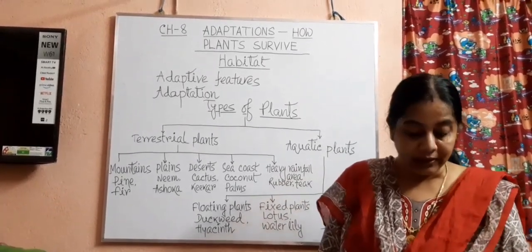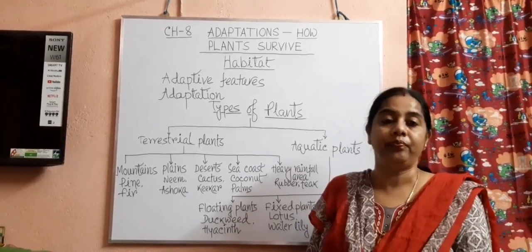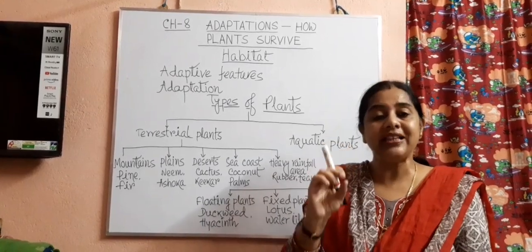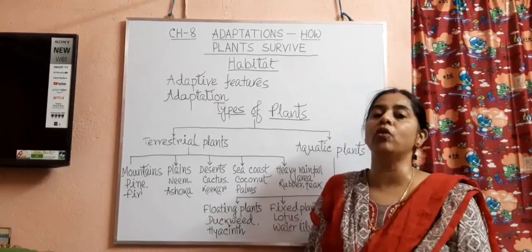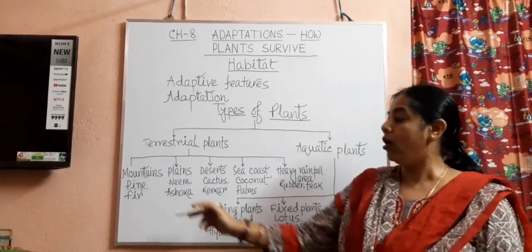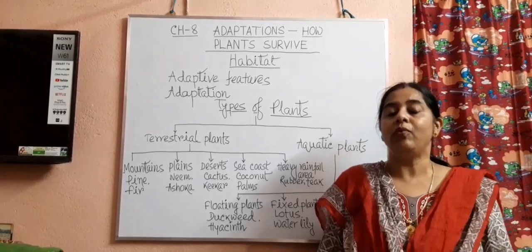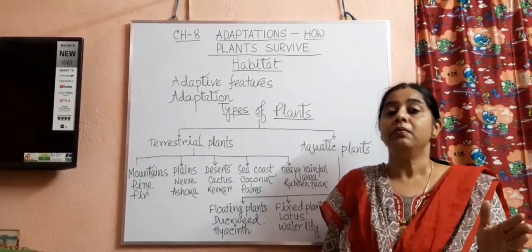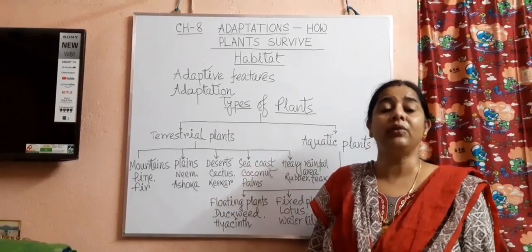The leaves of these plants are also needle-like and have a waxy coating on them. Because of the needle-like leaves and the waxy coating, snow or water cannot collect on them, preventing them from rotting. There are also flowerless plants like mosses and ferns that grow on mountains, adapting to the cold conditions of the hilly or mountain region.